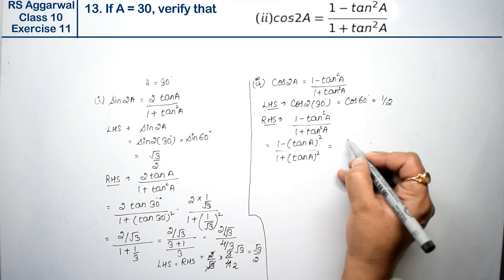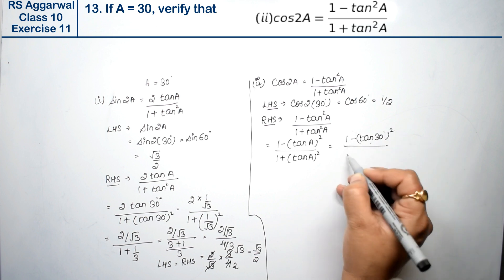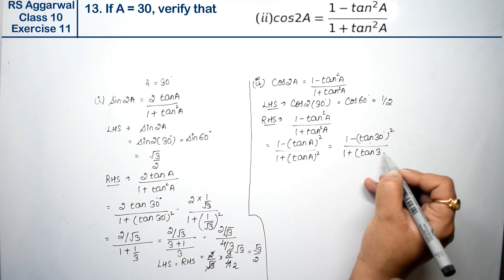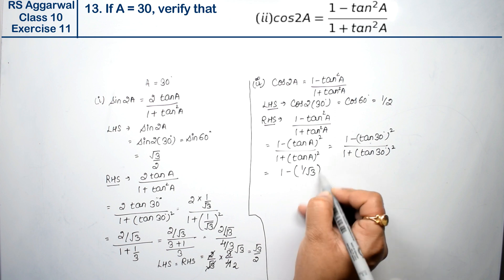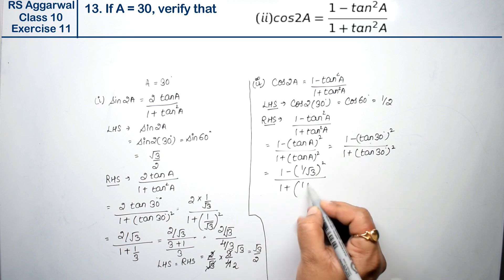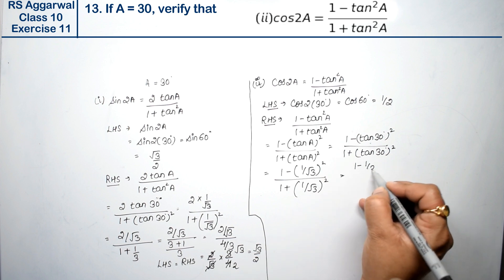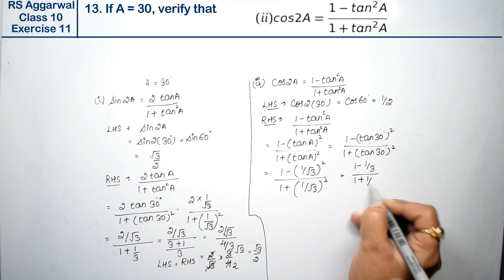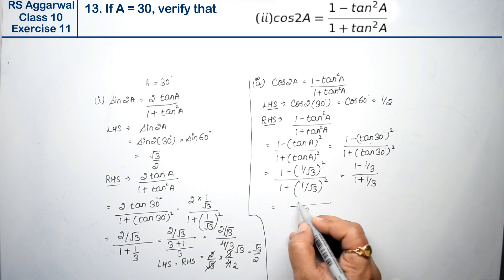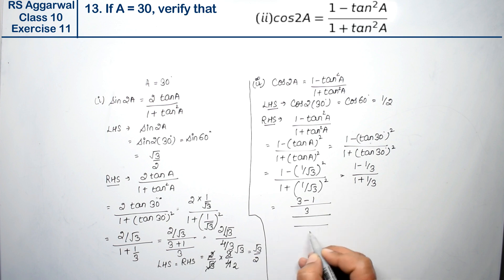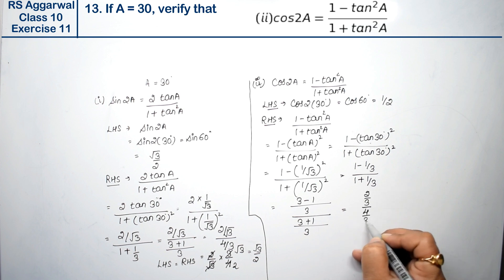For RHS: (1 - tan²30°) upon (1 + tan²30°). tan 30° = 1/√3, so tan²30° = 1/3. Numerator: 1 - 1/3 = (3-1)/3 = 2/3. Denominator: 1 + 1/3 = (3+1)/3 = 4/3. So we get (2/3) divided by (4/3).